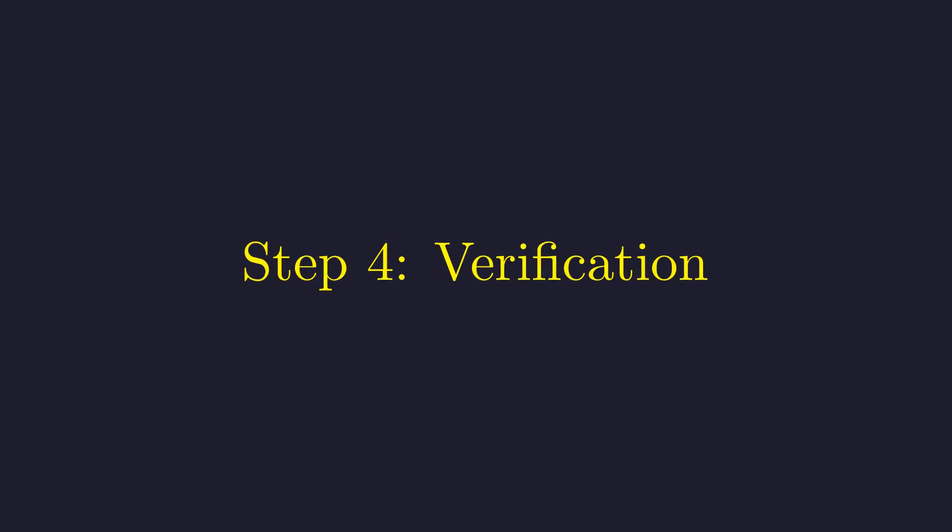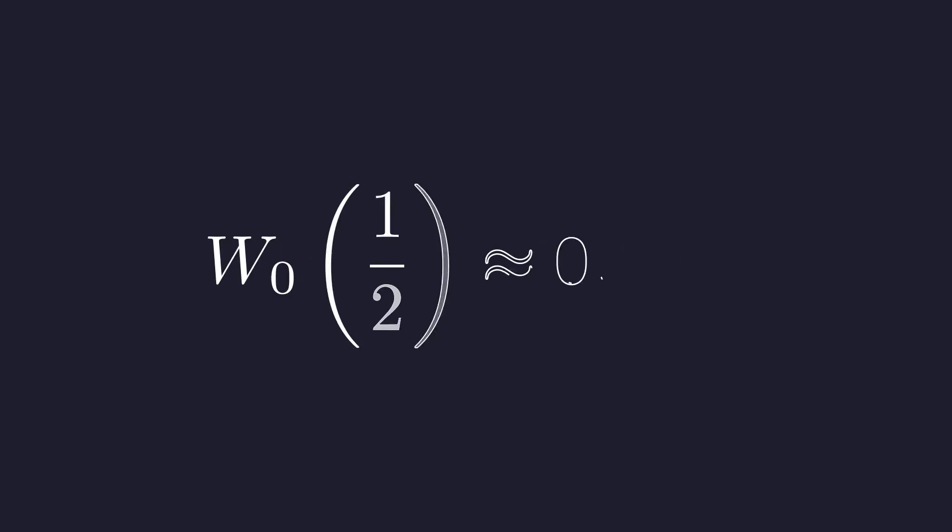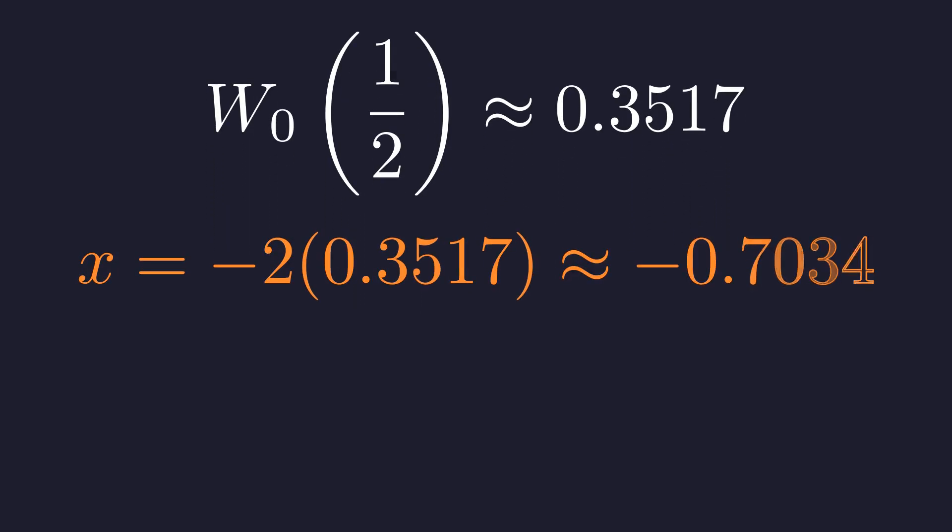Step 4. Let's verify this actually works by plugging in numbers. W sub 0 of 1 half is about 0.3517. Substituting this value, so x is about negative 0.7034. Now let's check both sides of the original equation.